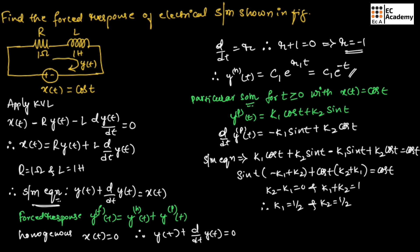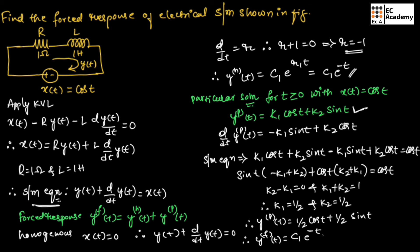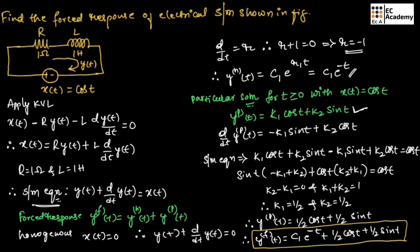Now, let us substitute the k1 and k2 values. Therefore, yp(t) is equal to (1/2)·cos(t) plus (1/2)·sin(t). Therefore, the forced response can be written as yf(t) is equal to c1·e^(-t) plus (1/2)·cos(t) plus (1/2)·sin(t). This is about the problem on the forced response of an electrical system. Hope you have understood the topic. Thank you.